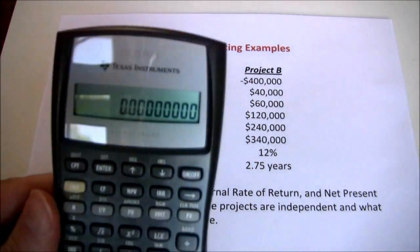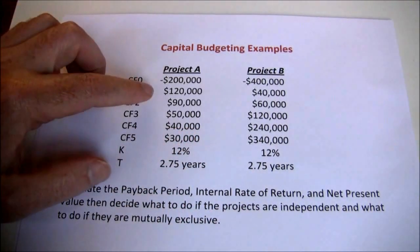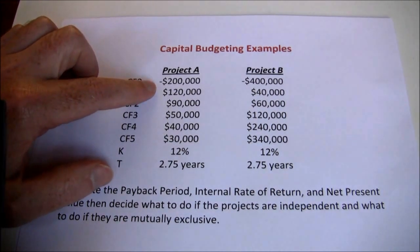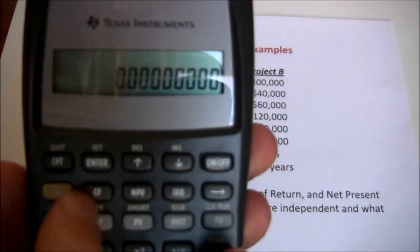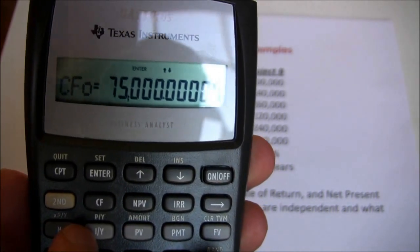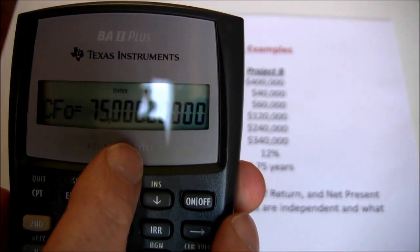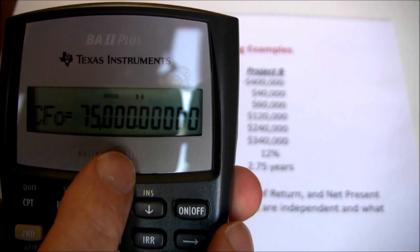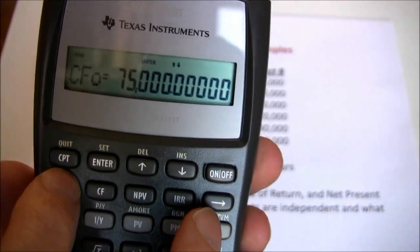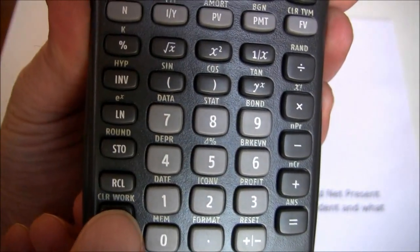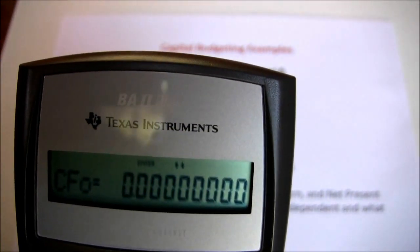So we're going to get out our financial calculator. The first thing we're going to do is look at that initial investment of $200,000. But remember, anytime you're using your cash flow worksheet you have to clear it out. So we want to start by pressing CF — that gets us into the cash flow module. From our previous problem we've already got $75,000 in there, so we want to clear that out. Once you press cash flow, then second, clear work — that clears out the worksheet. Now you can see there's nothing in the worksheet and we can go ahead and get started.